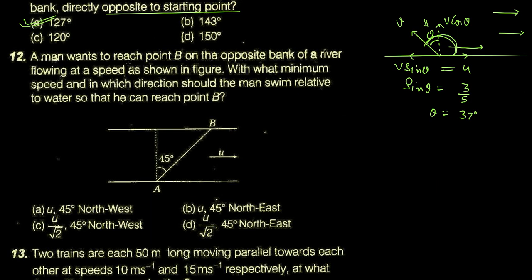A man wants to reach point B on the opposite bank of a river flowing at speed u as shown in the figure. اس person کو A سے B پہنچنا ہے جو کہ یہاں سے 45 degree angle پہ ہے۔ With what minimum speed and in which direction should the man swim relative to the water so that he can reach point B?